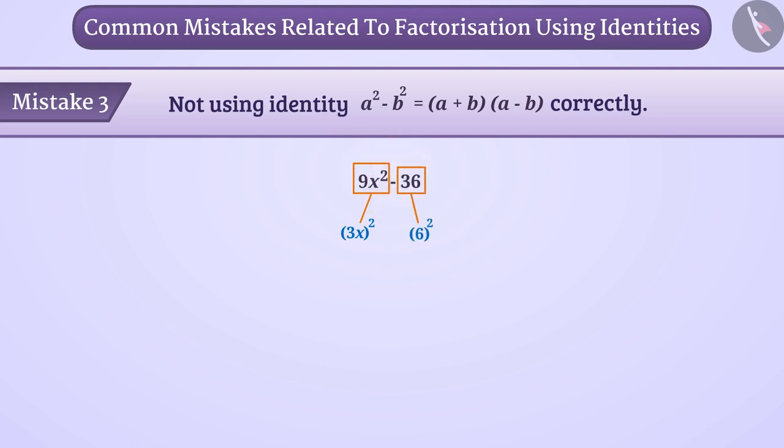In this way, a equals 3x and b equals 6. So the correct factorization will be 3x plus 6 into bracket 3x minus 6.